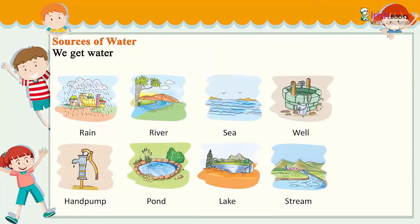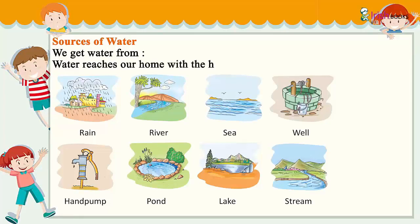Sources of water. We get water from rain, river, sea, well, hand pump, pond, lake, and stream. Water reaches our home with the help of pipes, tanks, and taps.